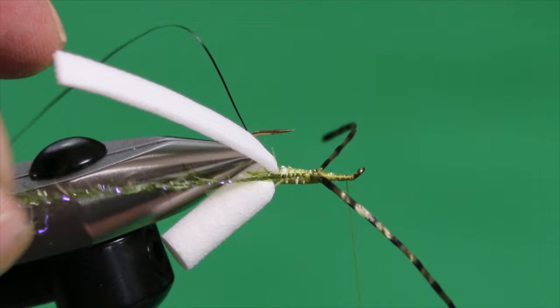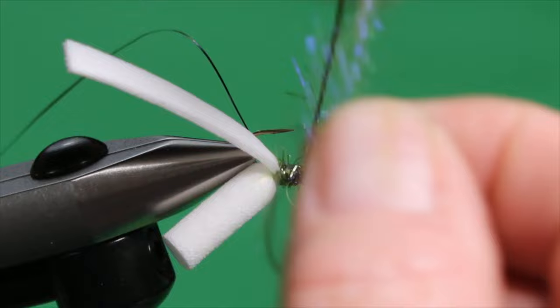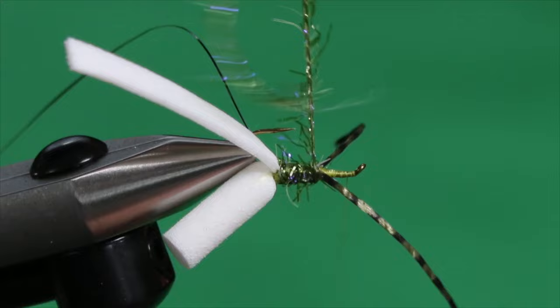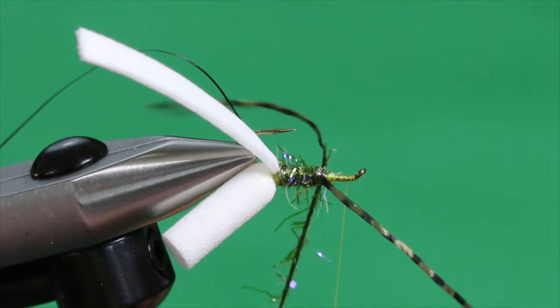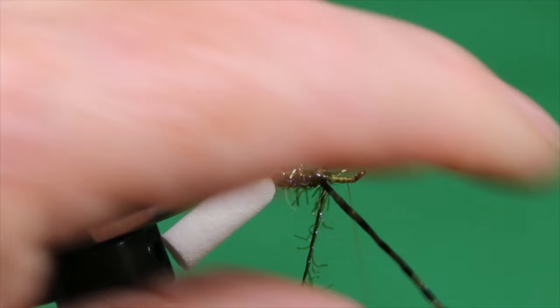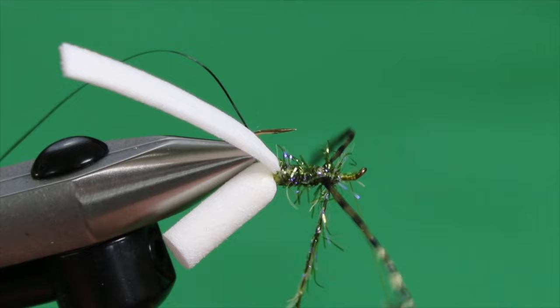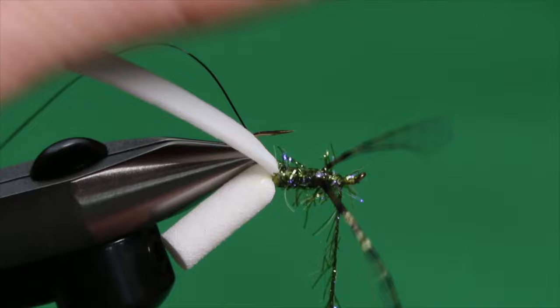So now we're just going to come forward and form our body by winding the straggle string forward in close touching turns. Be careful not to grab our legs. These legs just love to get in the way. And then I'm going to come up underneath and go directly in front of the legs. Moving them as necessary to keep them in check and not to accidentally tie them down. And you can overlap the wraps in the front a little bit, just to keep your body shape consistent. But again do not crowd that hook eye.